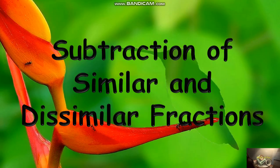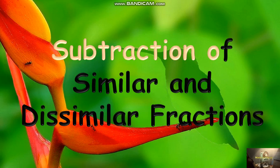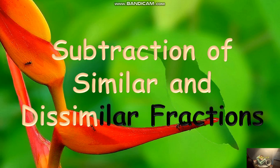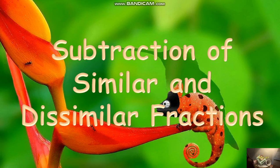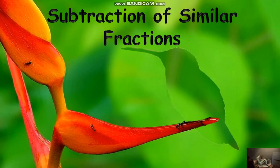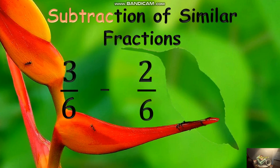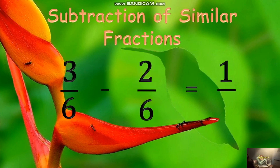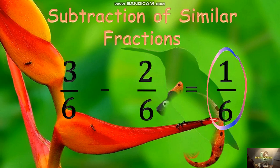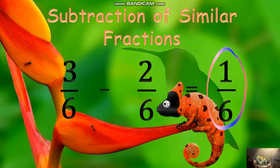Just like with the addition of like and unlike fractions, subtraction of similar and dissimilar fractions becomes easy for you now. Let us start with similar fractions. Subtract 2 from 3 equals 1. Copy the denominator 6, giving 1 sixth. Again, change your answer to the simplest form when necessary.